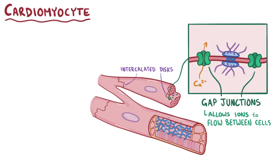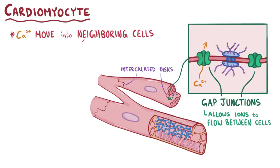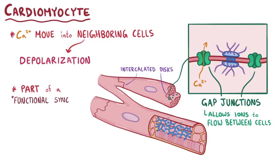When a cardiomyocyte depolarizes, ions like calcium move from the cell into a neighboring cell, and these ions trigger depolarization to happen in that cell. This is what makes cardiomyocytes part of a functional syncytium — they're like a little community of cells intimately working together.